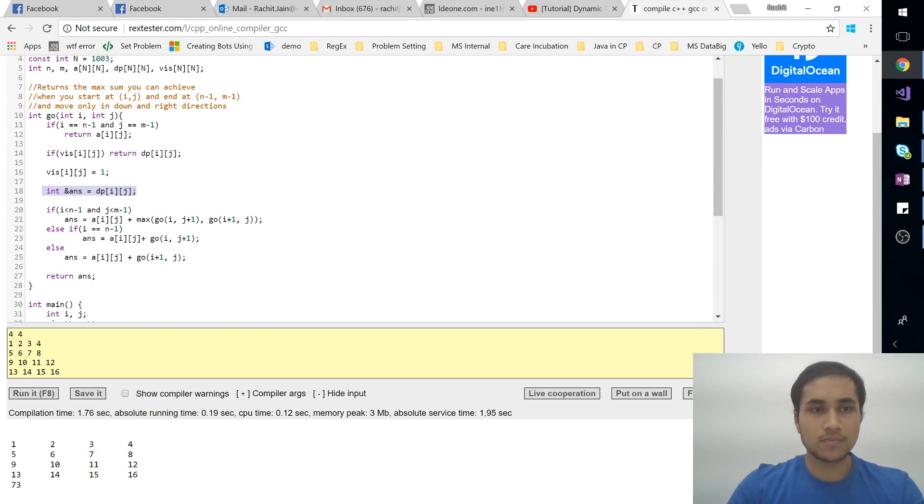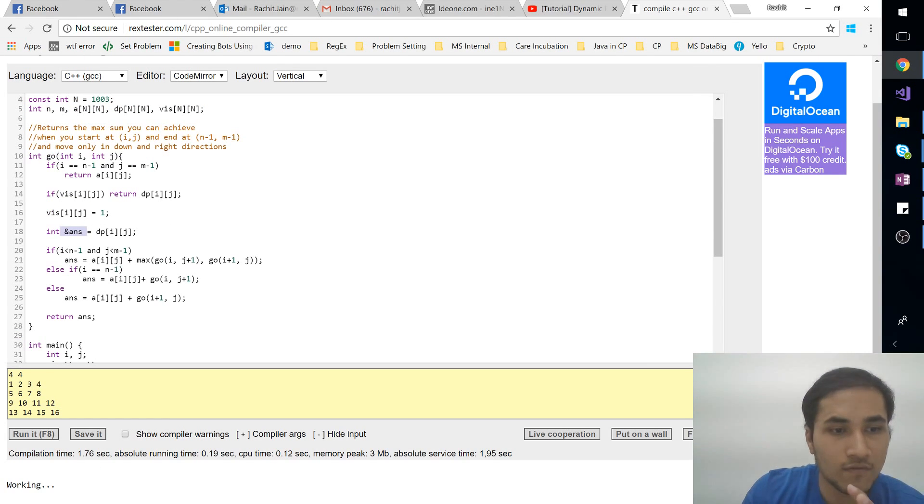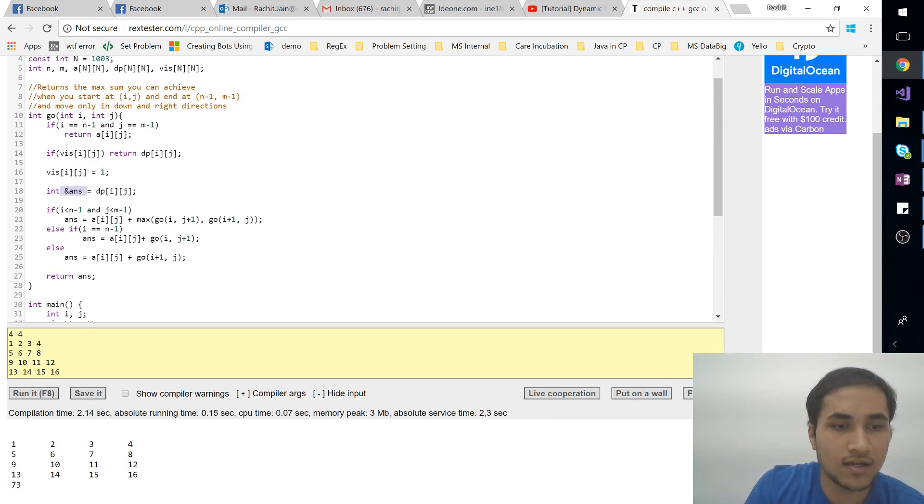I want to store my answer in dp[i][j] and I feel it very long to write dp[i] again and again over here. So just to save that effort, I'm storing a reference over here. Yeah, now this looks good. And if you run this again, it will again show 73. But this time dynamic programming has been plugged.